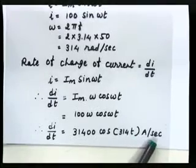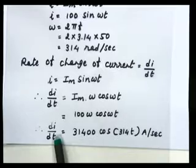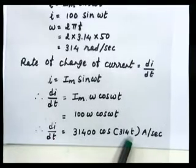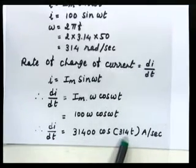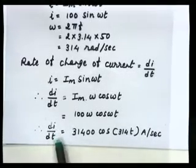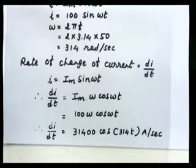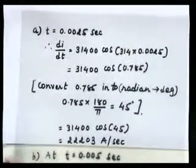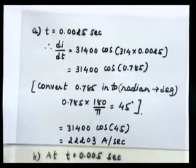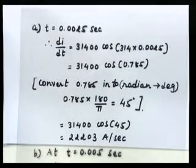So di/dt = 31400 cos(314t), with units of ampere per second. This is the general equation of di/dt, which changes with respect to time. In this example, times are given, so put the value of time into this equation to get the value of di/dt for each particular instant.